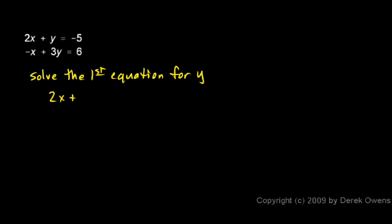So I have 2x + y = -5. I just subtract 2x from each side and I end up with y = -2x - 5. And then I substitute, and this is why this method is called the substitution method.